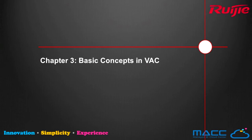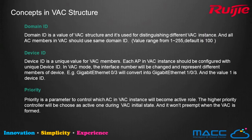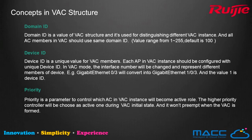The next section introduces the basic concepts in VAC. Domain ID is a value in the VAC structure used to distinguish different VAC instances, and all AC members in a VAC should use the same Domain ID. Device ID is a unique value for each VAC member — each AC in a VAC instance should be configured with a unique Device ID. In VAC mode, interface numbers are renamed to represent different member devices. For example, interface 0/3 becomes interface 1/0/3, where the value 1 is the Device ID.